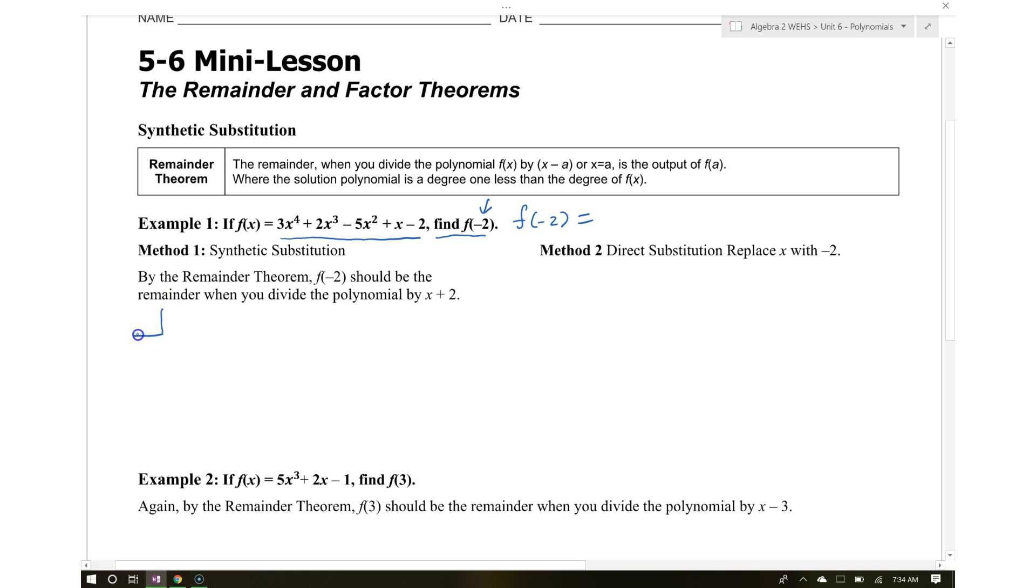Start by writing negative 2 in the corner. Then list the coefficients: 3, 2, negative 5, 1, and negative 2. Make sure that the powers are in descending order. In this case, they are.